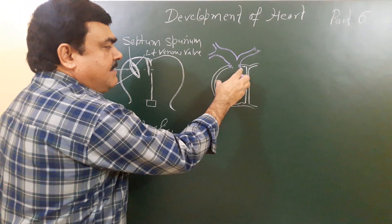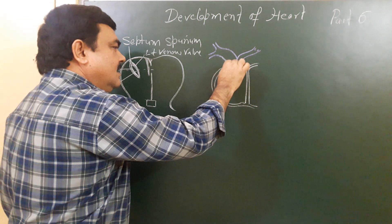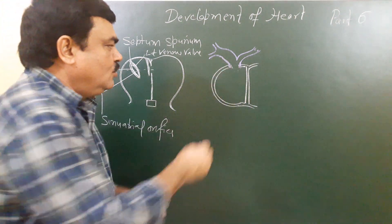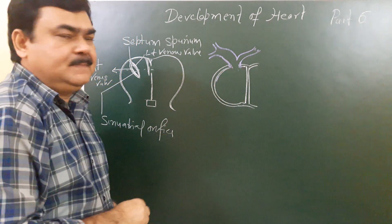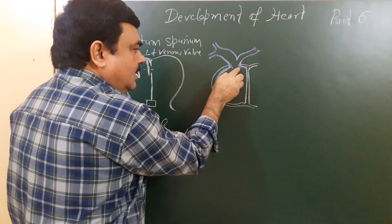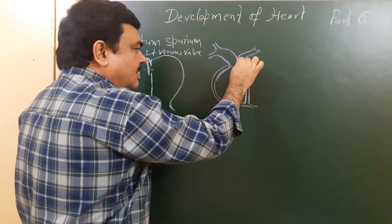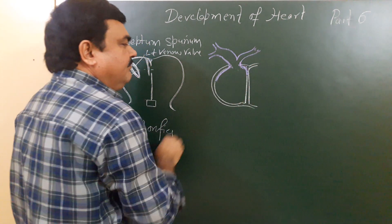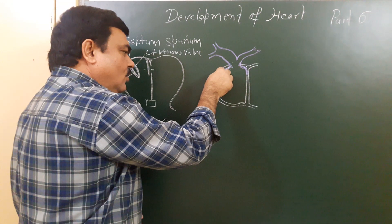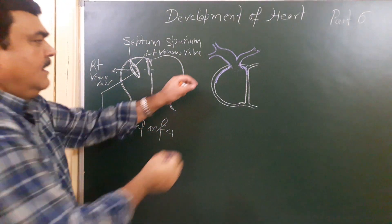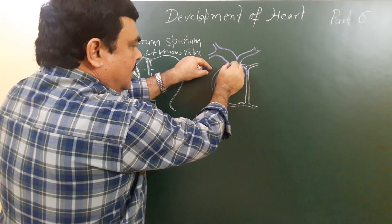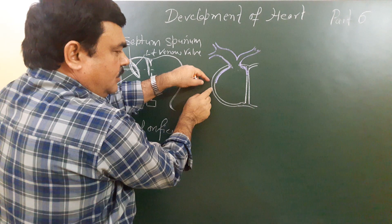As this chamber grows, the sinus venosus is absorbed into it. The left valve merges with the septum intermedium, and the right valve grows accordingly. With the absorption of these valves into the atrial chamber, the structures become reorganized.